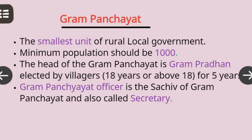In this session, we shall focus on Gram Panchayat. Gram Panchayat is the smallest unit of rural local self-government. To form a Gram Panchayat, the minimum population should be 1,000. The head of Gram Panchayat is the Gram Pradhan, who is elected by villagers for five years. The Gram Panchayat officer is the Sachi, also known as secretary.